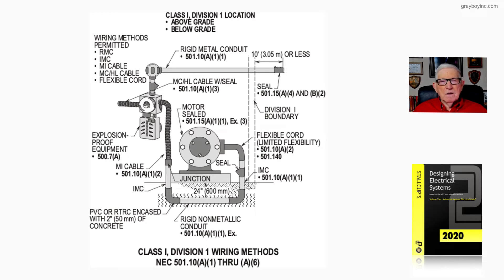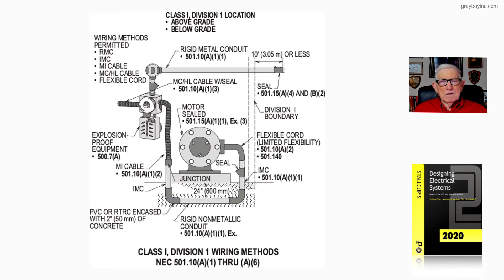If you're using flexible cord, that's covered under 501.140. If it's 24 inches in the earth, you could use non-metallic conduit in accordance with 501.10A1 item 1, but it's an exception. A lot of times you're going to encase it with 2 inches of concrete, and then use a metal elbow so you don't saw through the elbow when pulling in your wire. An MI cable can also be used as a sealing means in accordance with 501.10A1 item 2.